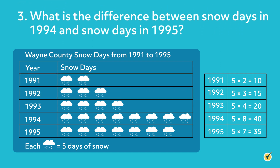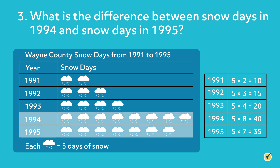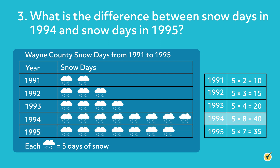What is the difference between snow days in 1994 and snow days in 1995? For this question, we need to find the total number of snow days in 1994 and 1995 respectively and subtract. 1994 had 40 snow days and 1995 had 35 snow days. To find the difference, subtract 40 minus 35, which equals 5. The difference between snow days in 1994 and snow days in 1995 is 5.